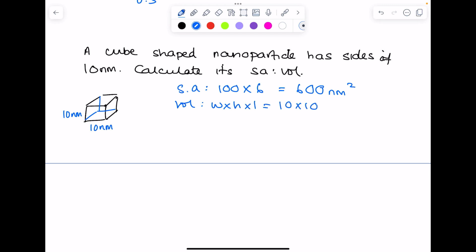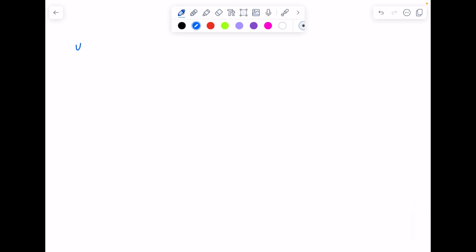What about the volume? Well, we do width times height times length, so that's just 10 times 10 times 10 to get 1000 nanometers cubed. So our surface area to volume ratio is just 600 to 1000, and then just simplify it, so divide both sides by 600 to get that as your final answer.